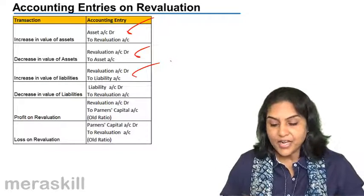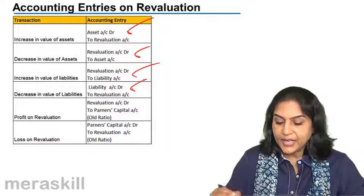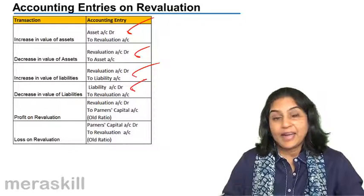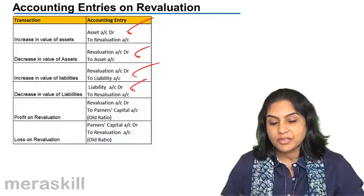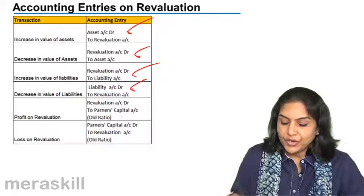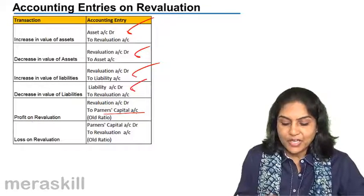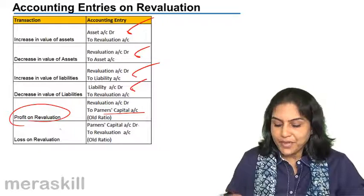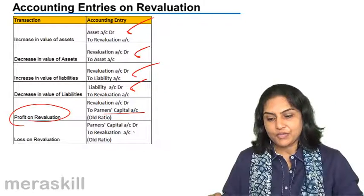Decrease in the value of liabilities — debit liability, credit revaluation. A credit balance in the revaluation account reflects profit, so revaluation is debited to partner's capital account in case of profit. But if it is a loss, then partner's capital accounts are debited to the revaluation account.